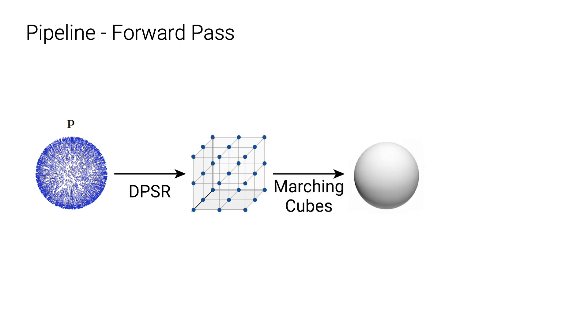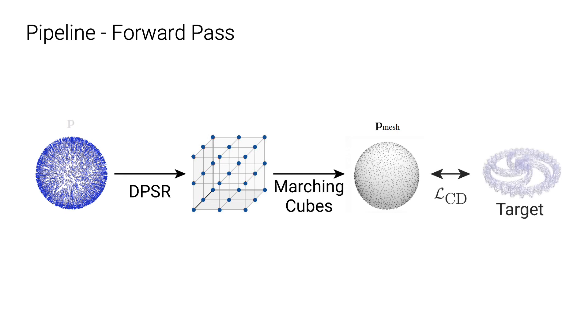From the indicator grid, we can extract a mesh using marching cubes, then sample points from the mesh, and calculate the chamfer distance with respect to the given target oriented point cloud. This is the forward path of the optimization pipeline.